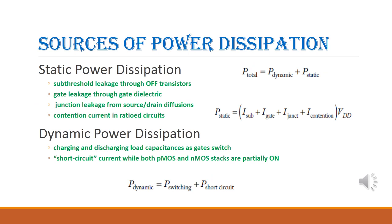Let us see sources of power dissipation. There are two types: static power dissipation and dynamic power dissipation. Total power dissipation is given by dynamic power dissipation plus static power dissipation. The causes for static power dissipation are: first, sub-threshold leakage through off transistors; second, gate leakage through gate dielectric; and third, junction leakage from source or drain diffusion.